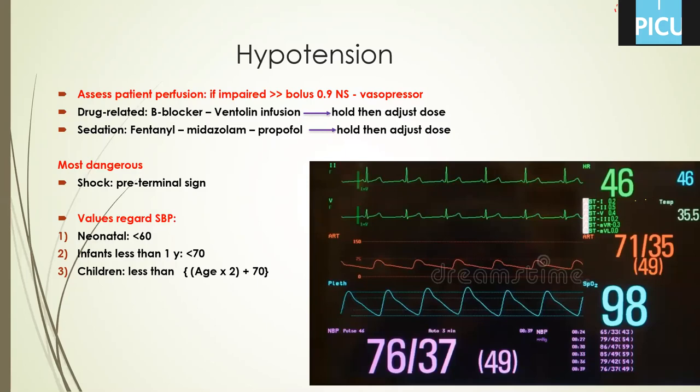Here we can revise the pre-terminal signs. In respiration: bradypnea and gasping. In cardiovascular: bradycardia and hypotension. In skin: cyanosis. These are all pre-terminal signs and the patient may be lost in seconds, requiring immediate intervention — oxygen, open the airway, IV access, and bolus saline.